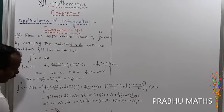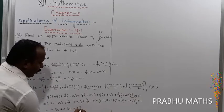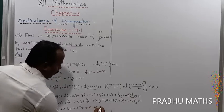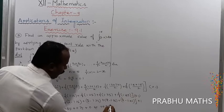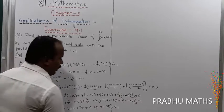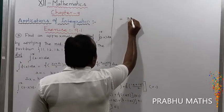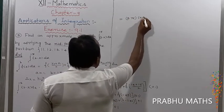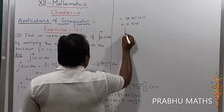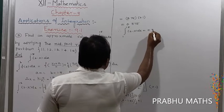This equals 0.95 plus 0.85 plus 0.75 plus 0.65 plus 0.55, multiplied by 0.1. The sum of all five terms is 3.75, so 3.75 into 0.1 equals 0.375. Therefore, the integral from 1 to 1.5 of (2 minus x) dx equals 0.375.